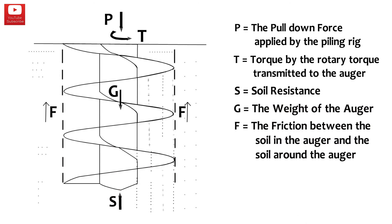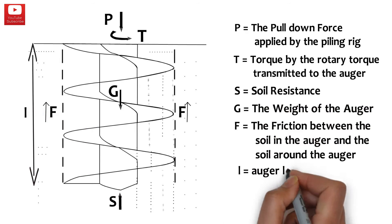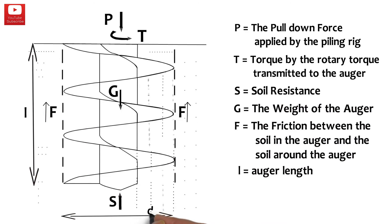L is the auger length, d is the outer auger diameter, and d0 is the auger stem diameter. Thank you very much for watching our CFA series guys, see you next time with another interesting episode from our industry.